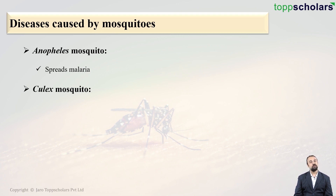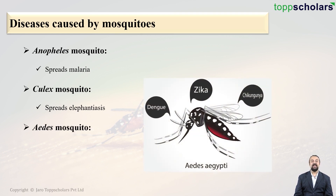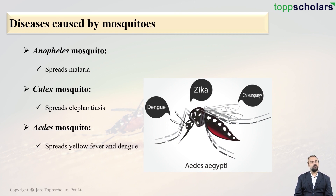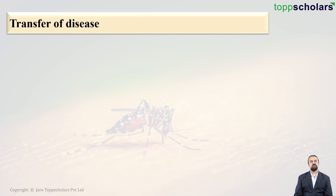Next we have the Culex mosquito, which spreads elephantiasis, also known as filariasis. Another example is the Aedes mosquito, which is very dangerous and notorious because it spreads many different types of diseases, for example yellow fever, dengue, Zika, chikungunya, and others.